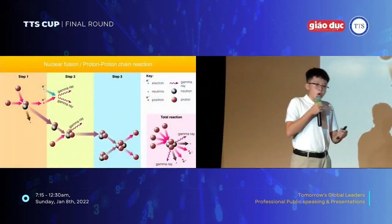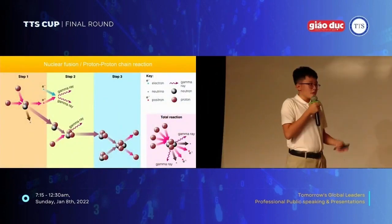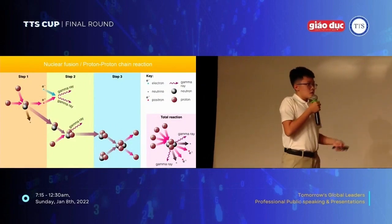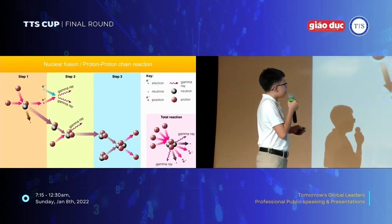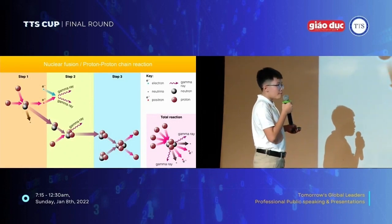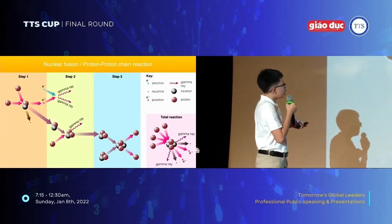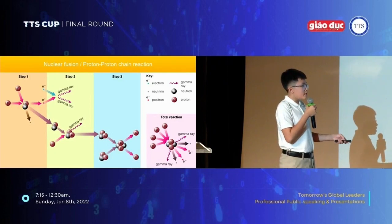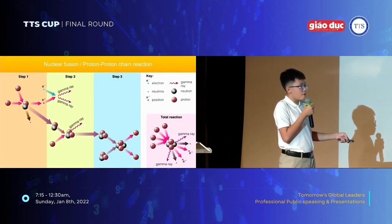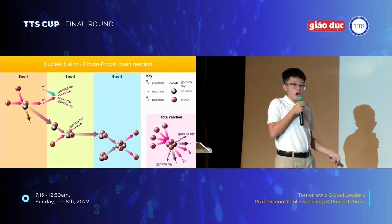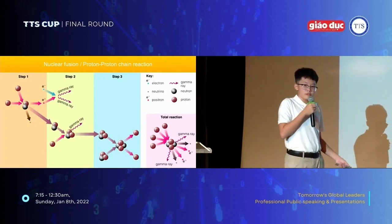I will tell you the whole process of nuclear fusion — the proton-proton chain reaction. In step 1, two protons transform into a deuterium plus a positron and an electron neutrino. The total reaction is that four protons turn into helium-4 by releasing two gamma rays, two positrons, and two electron neutrinos.